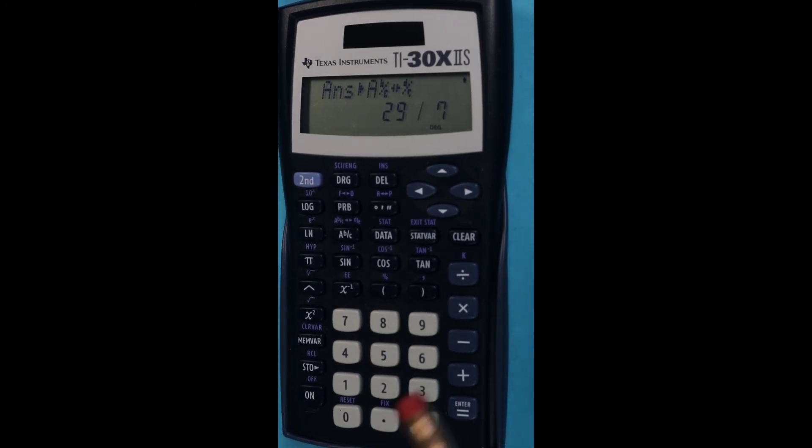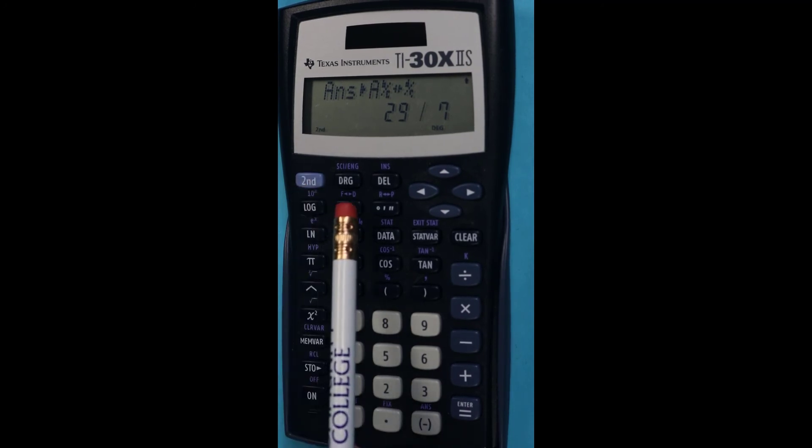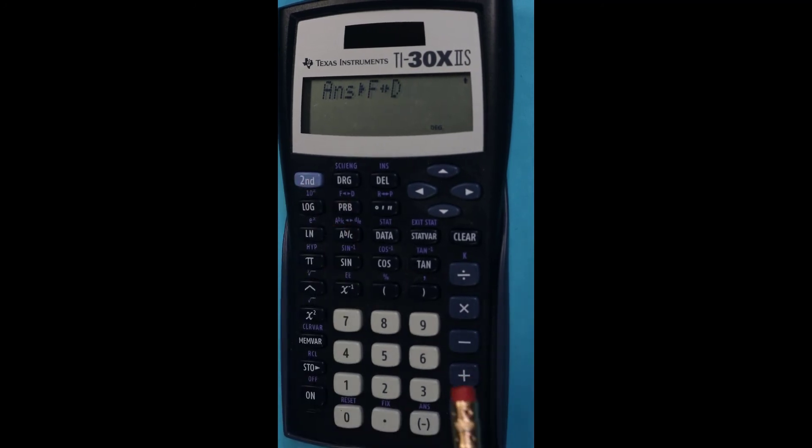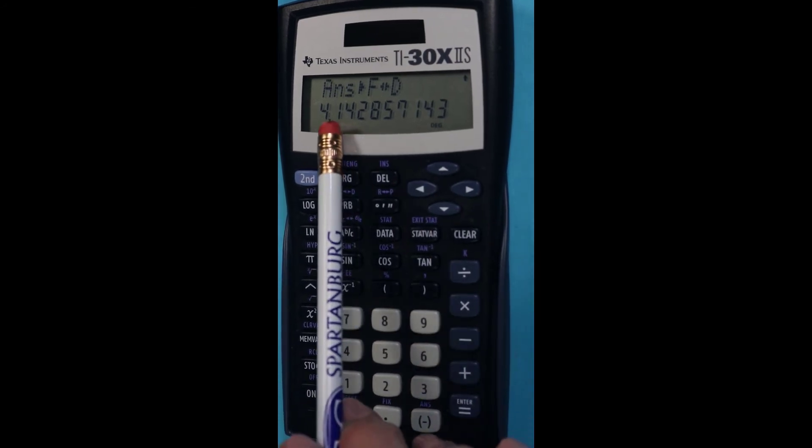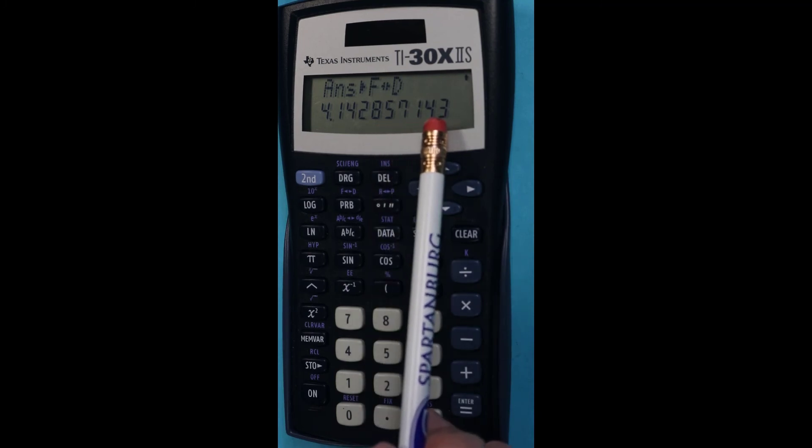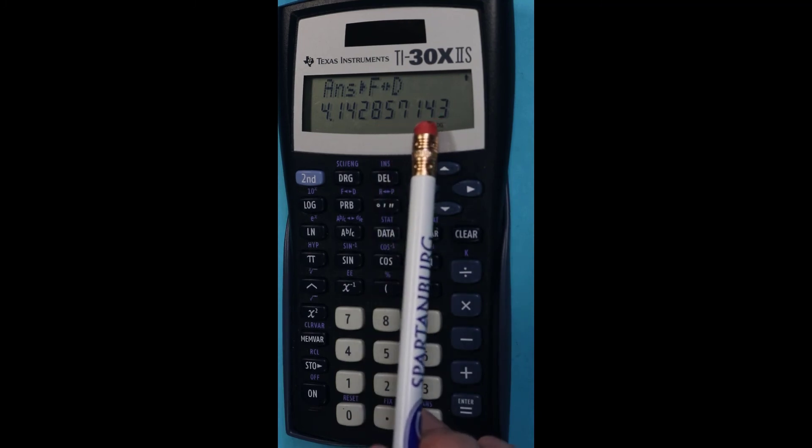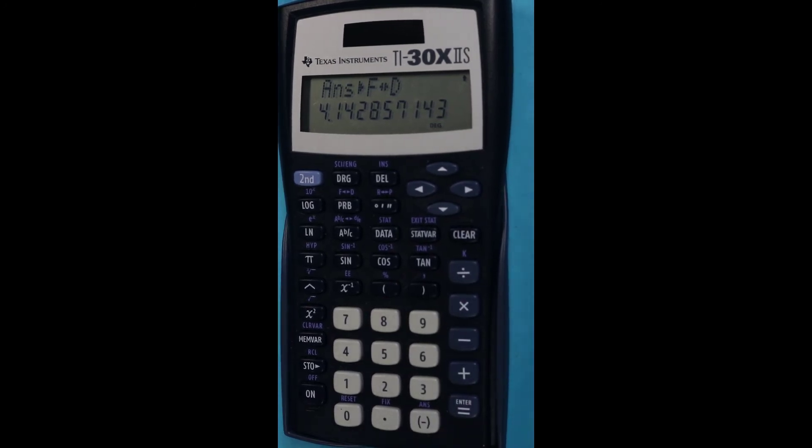And then if we want to go from that to a decimal form, we do second and this FD key. And you're going to see a pretty long decimal. It actually does repeat: 1, 4, 2, 8, 5, 7, 1, 4. This has been rounded here. It would normally be 1, 4, 2, 8, 5, 7 if you could display all those places.